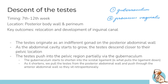Moving on to the processus vaginalis — it's essentially an outpouching of parietal peritoneum that descends down with the testes. It is basically obliterated in females, but in males it leaves behind a remnant called the tunica vaginalis. The processus vaginalis allows the previously intra-abdominal testes to exit the abdominal cavity, and the testes descend posterior to the processus vaginalis, which is quite important.